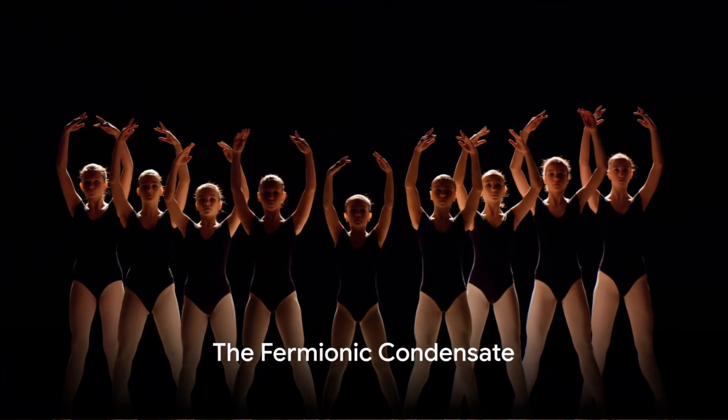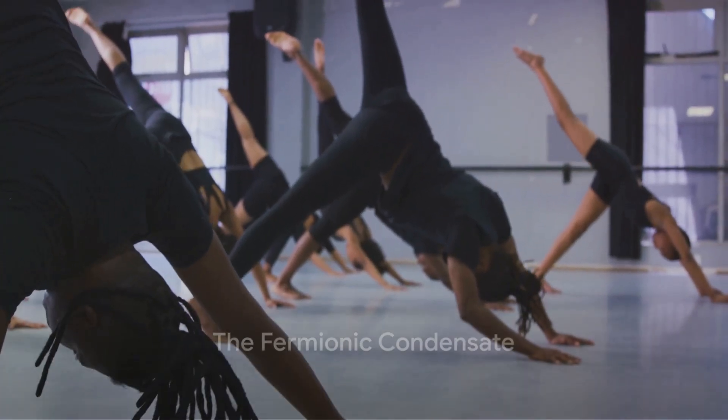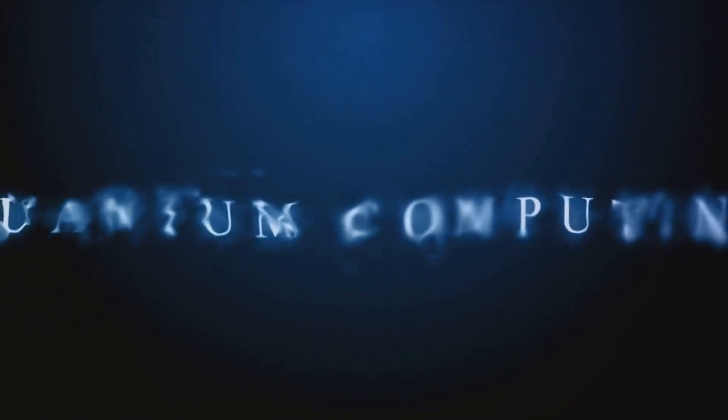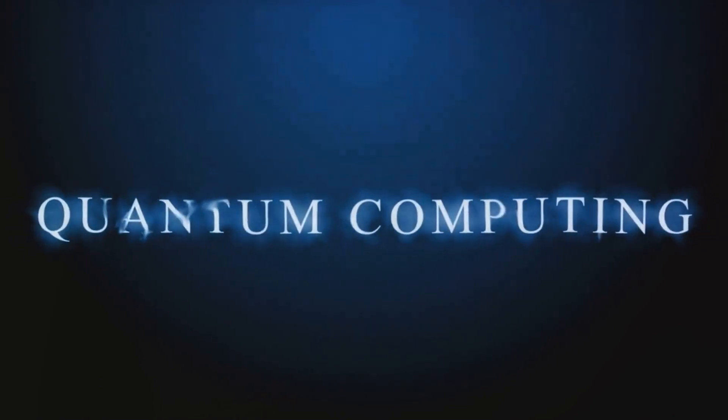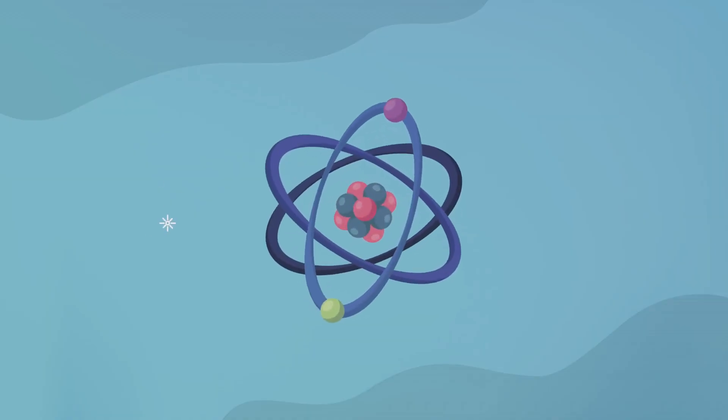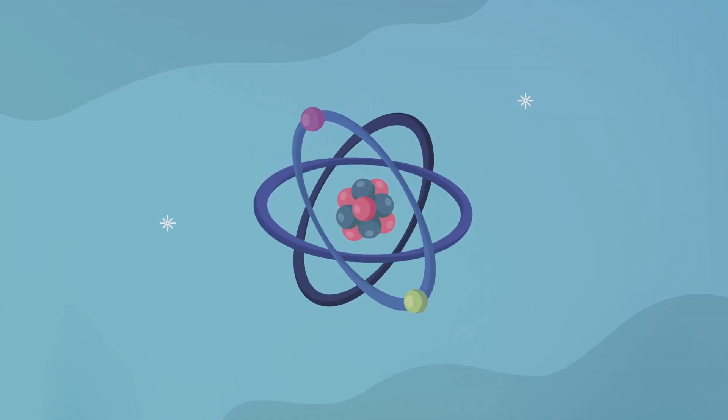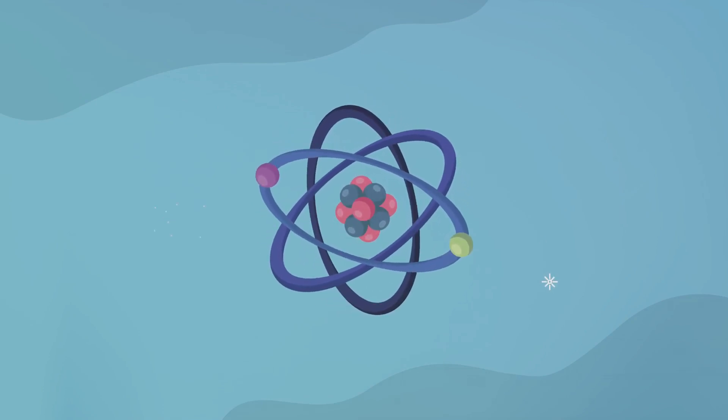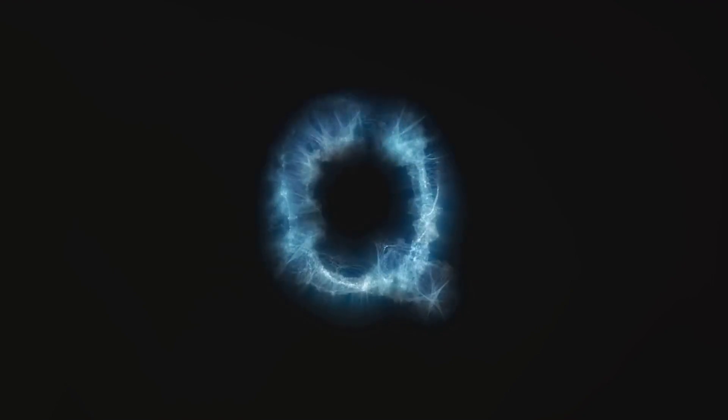Imagine a group of dancers moving in perfect synchronization, almost as if they were one entity. This is analogous to a fermionic condensate. Just as dancers, each with their unique style and grace, come together to form a harmonious ensemble, fermions, which are particles with half-integer spin, can under certain conditions begin to behave as if they were a single entity. This collective behavior forms what we call a fermionic condensate.